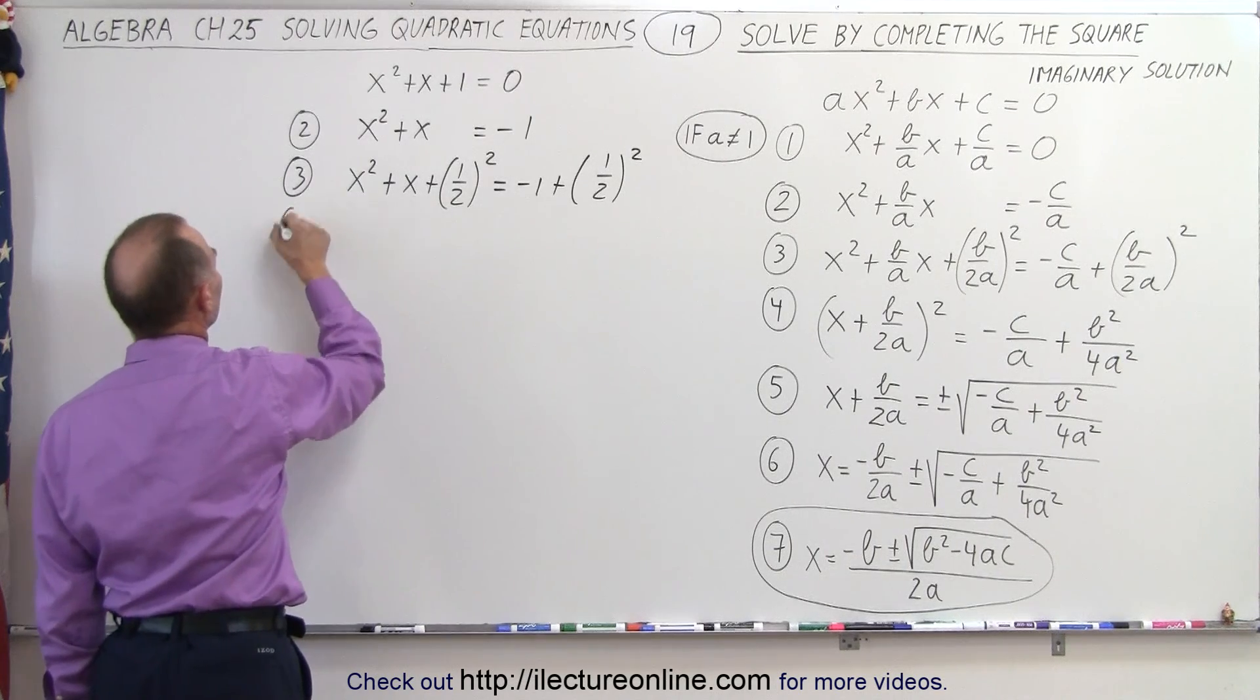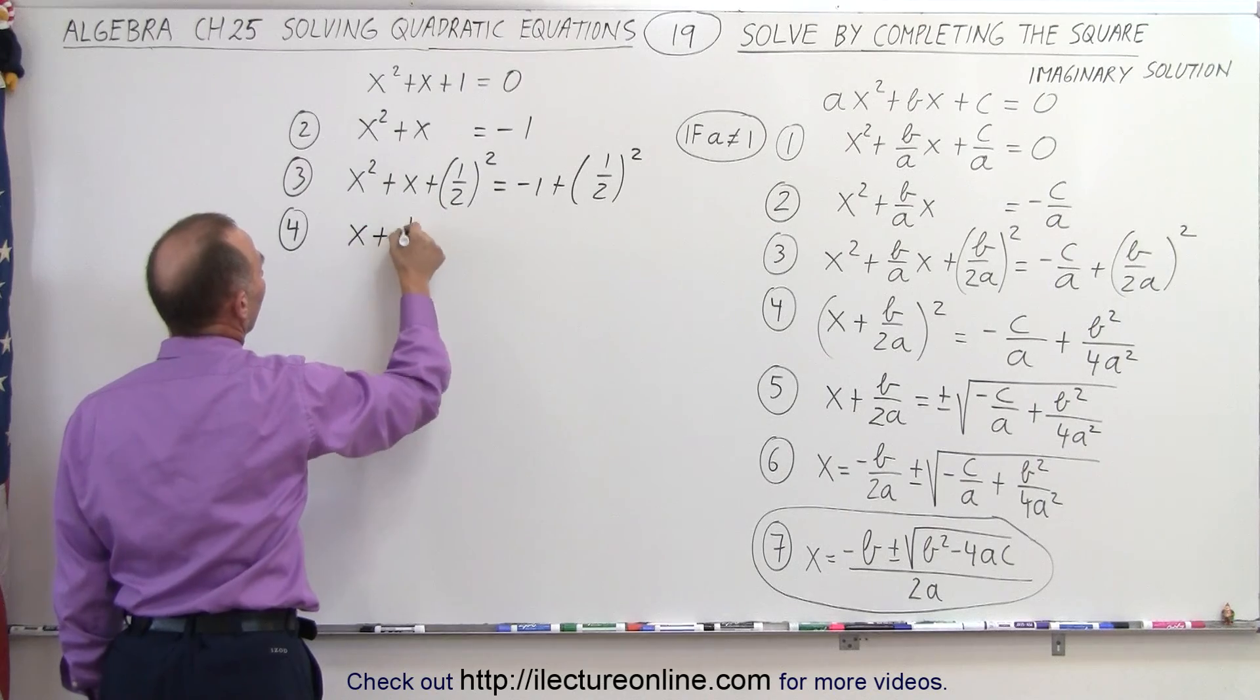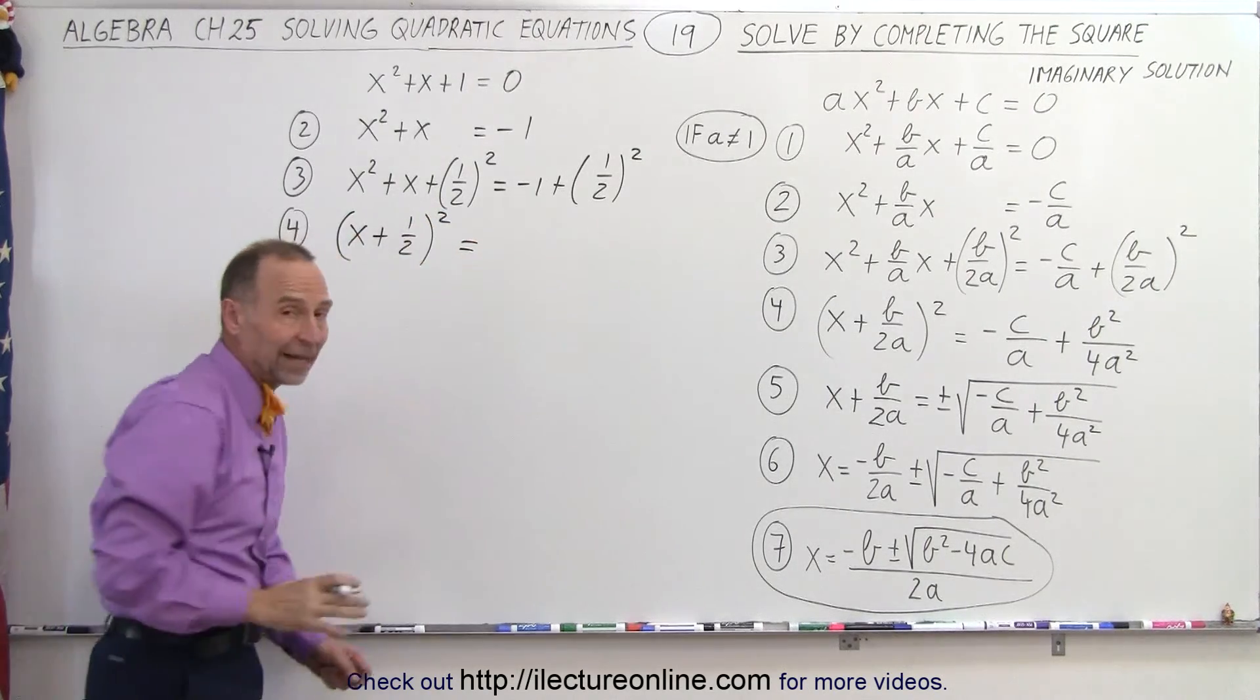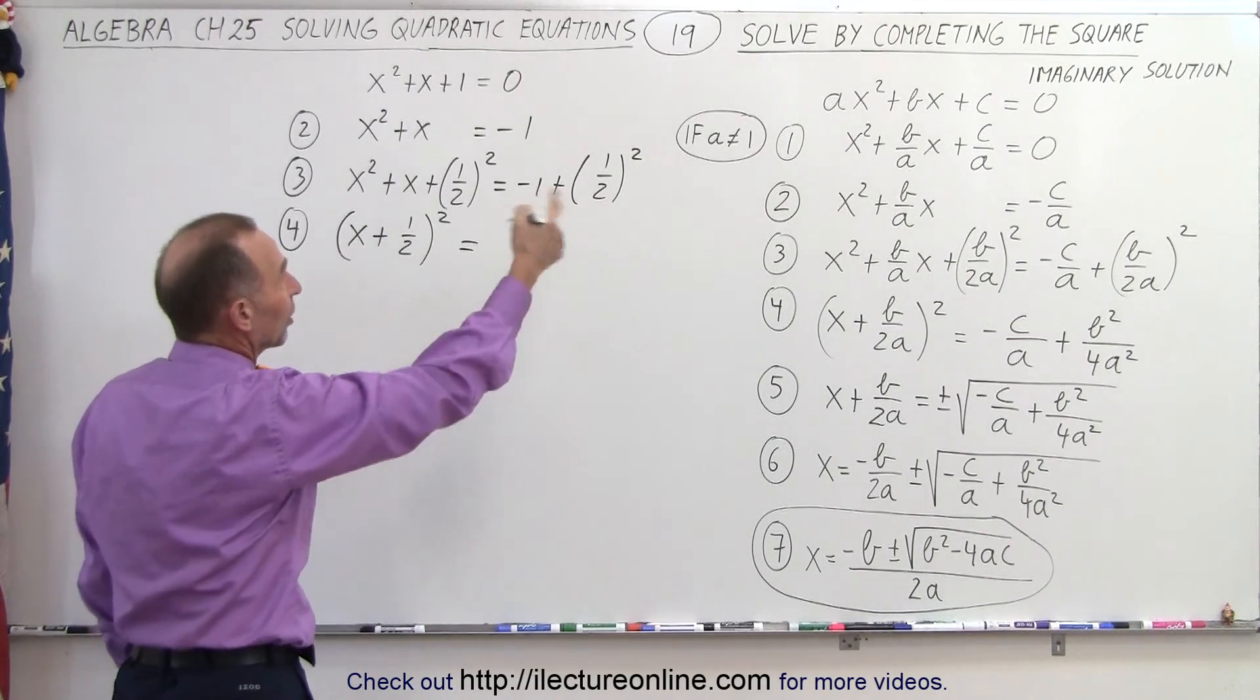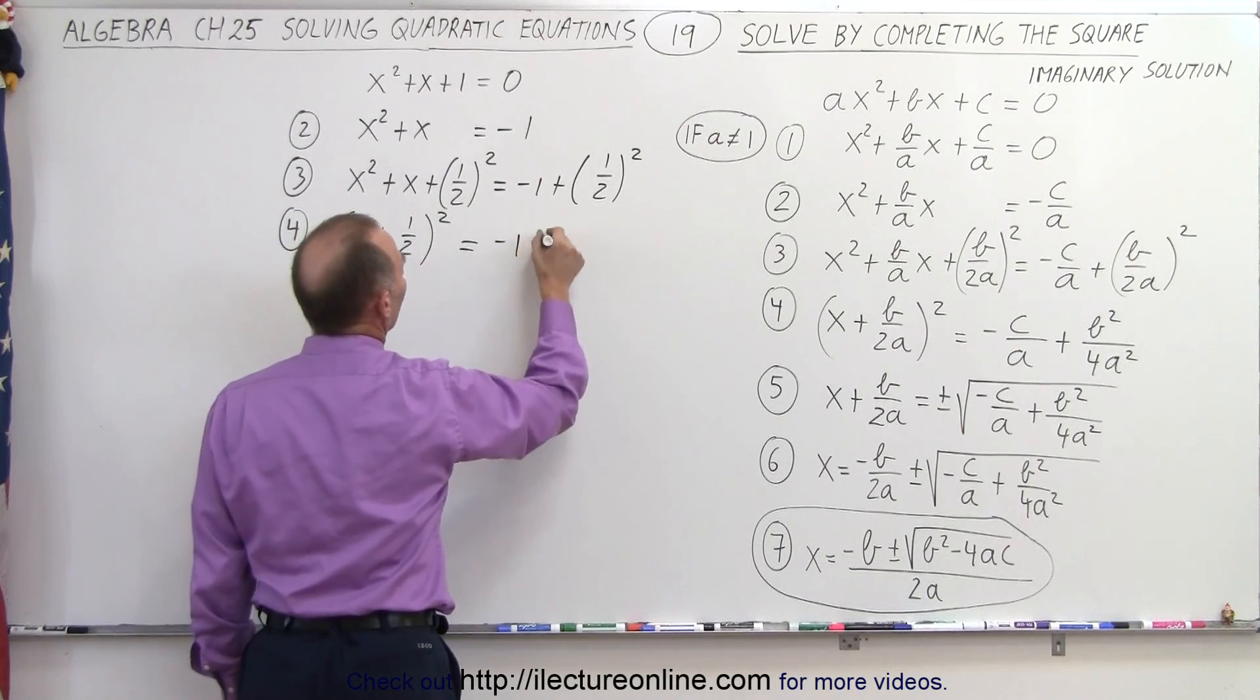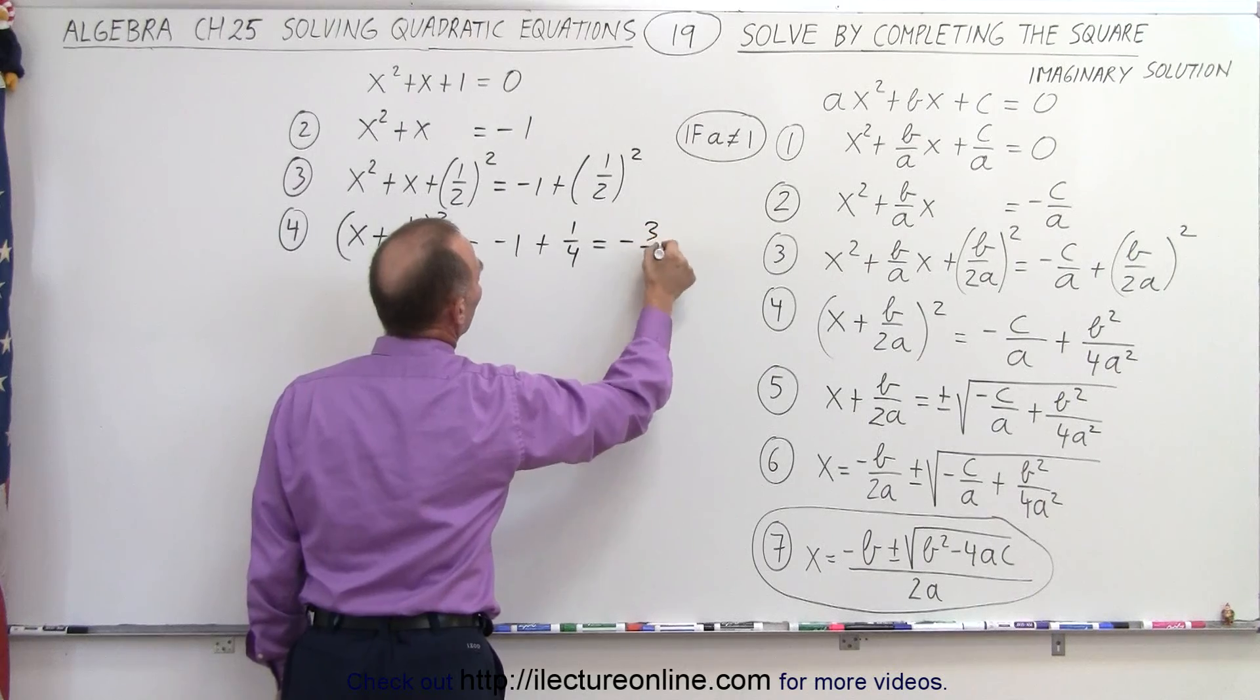We can factor the left side, so when we factor the left side, we get x plus 1 half quantity squared. That means we can write the left side as the square of a binomial. That's the whole idea behind using the completion of the square method. And on the right side, we get negative 1 plus 1 quarter, which is equal to negative 3 quarters.